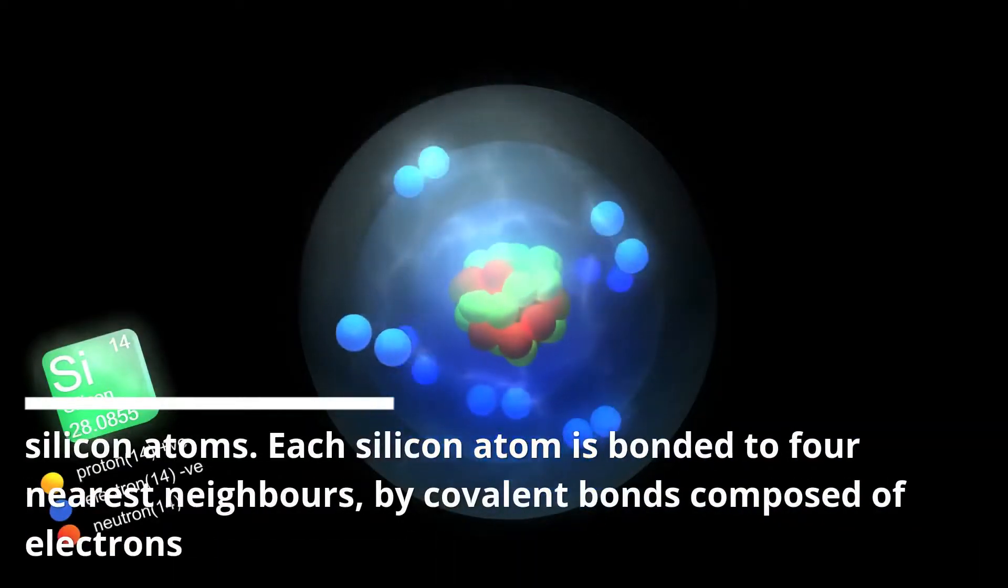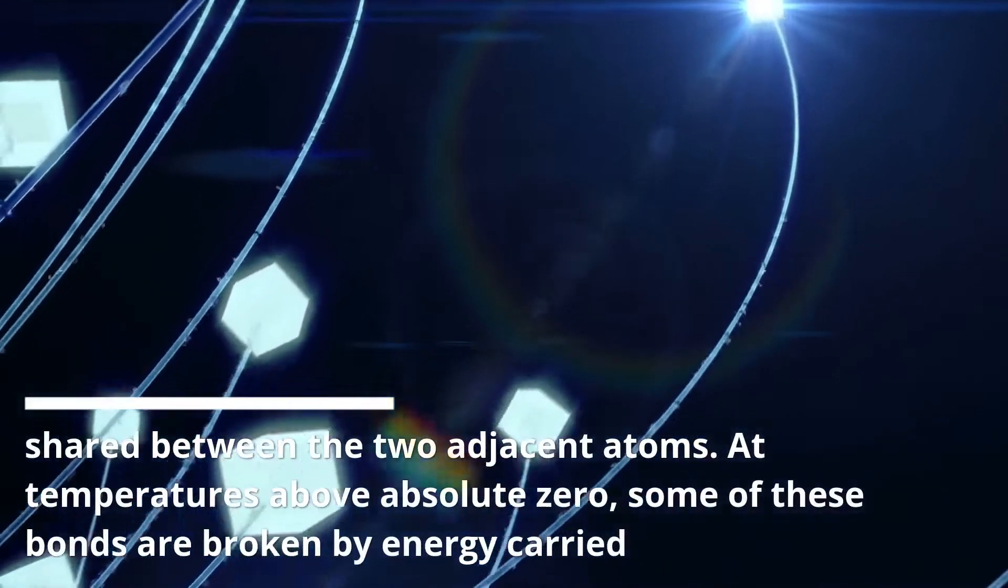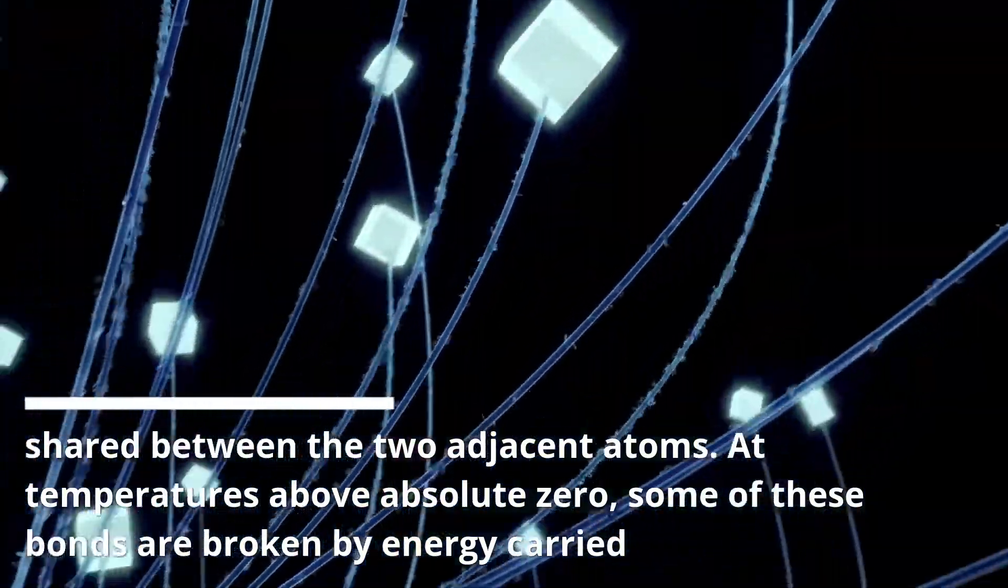Each silicon atom is bonded to four nearest neighbors by covalent bonds composed of electrons shared between the two adjacent atoms. At temperatures above absolute zero,